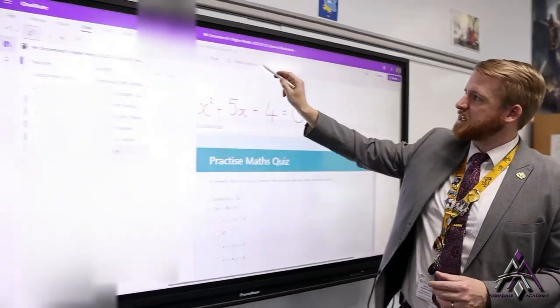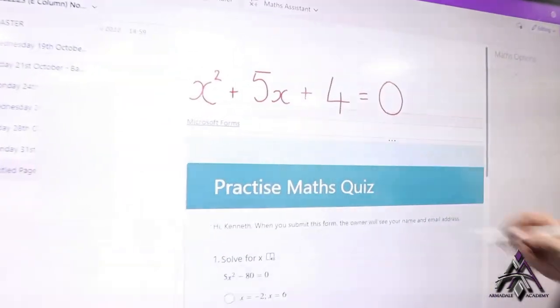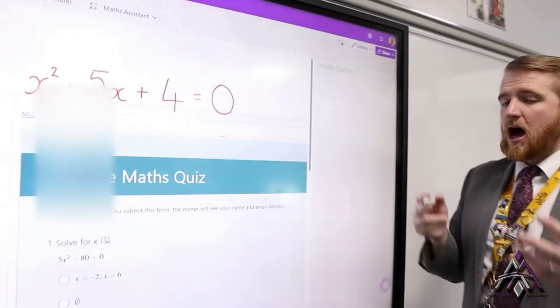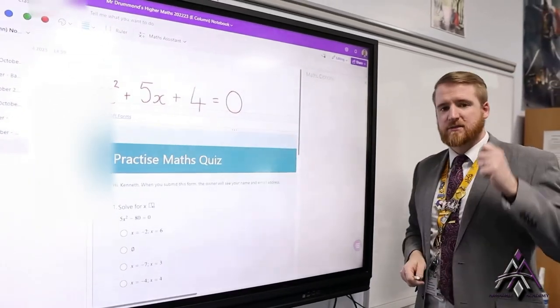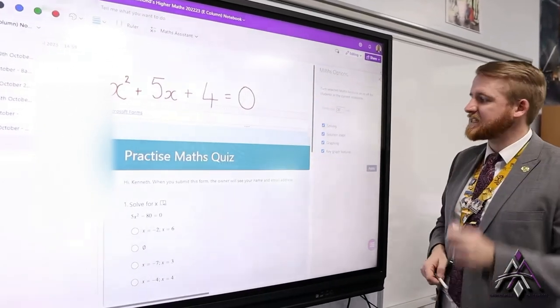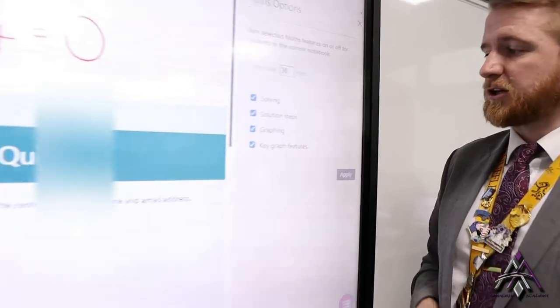But also if we go to the maths assistant button one more time, to turn maths on or off, you might want to limit how much you're giving. Remember those options we had a minute ago in terms of graphing it, in terms of factorising, in terms of solving it. You might decide to limit that for your particular young people.